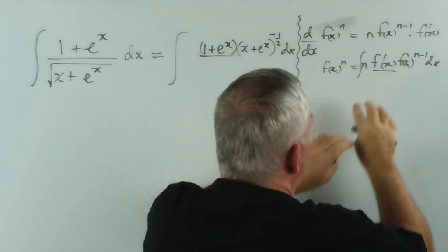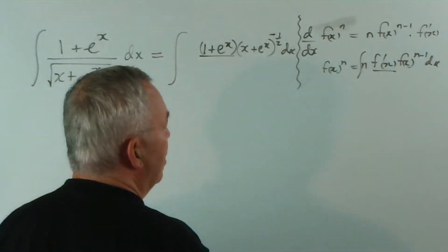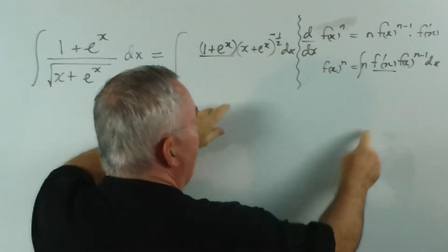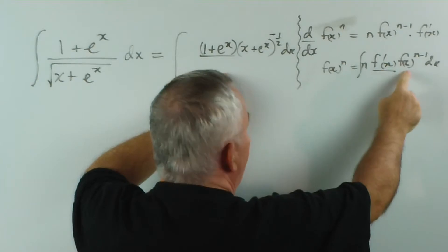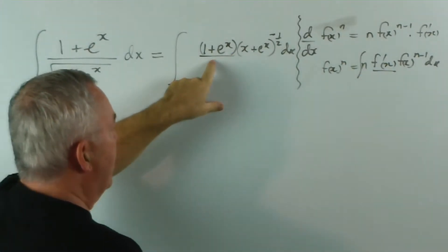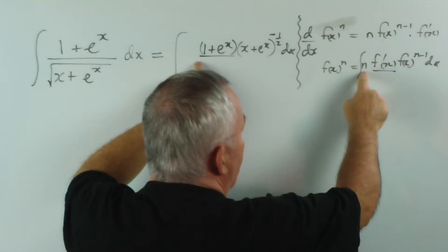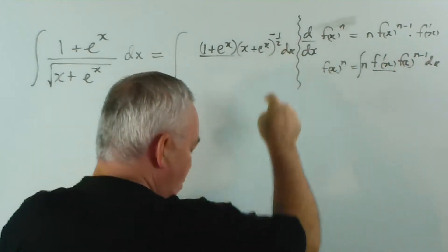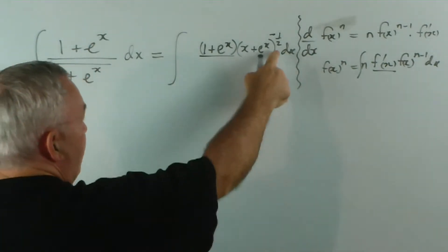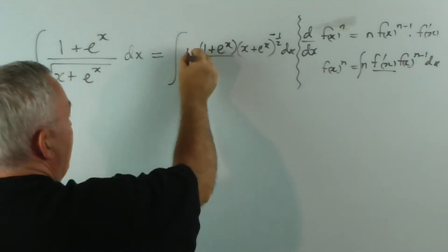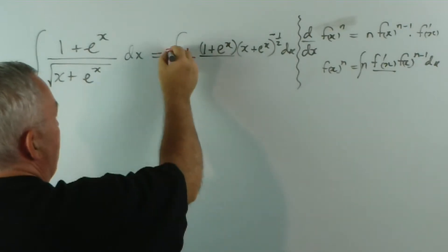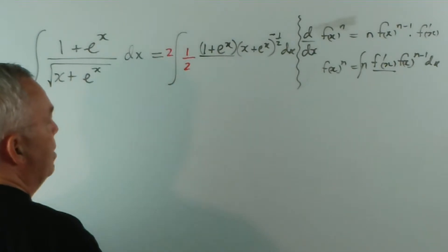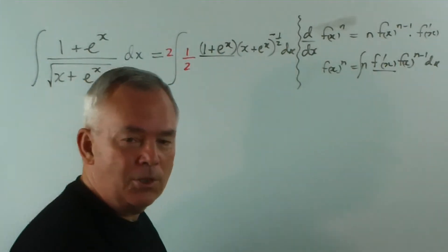How does that pattern compare with what we've got? Well, we have a function to a power, we've definitely got that. We have the derivative of the function in front of the function. All we need to get is this number right. We need a number here which is one more than that. What is one more than minus a half? It's plus a half. And to compensate, we multiply by two on the outside, because two times a half is one, and multiplying by one won't change the value.